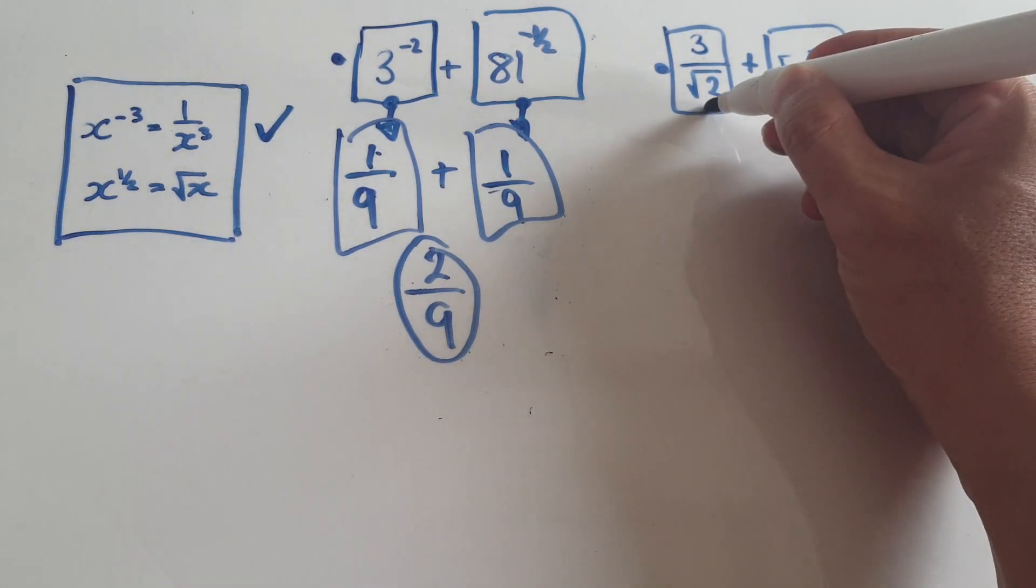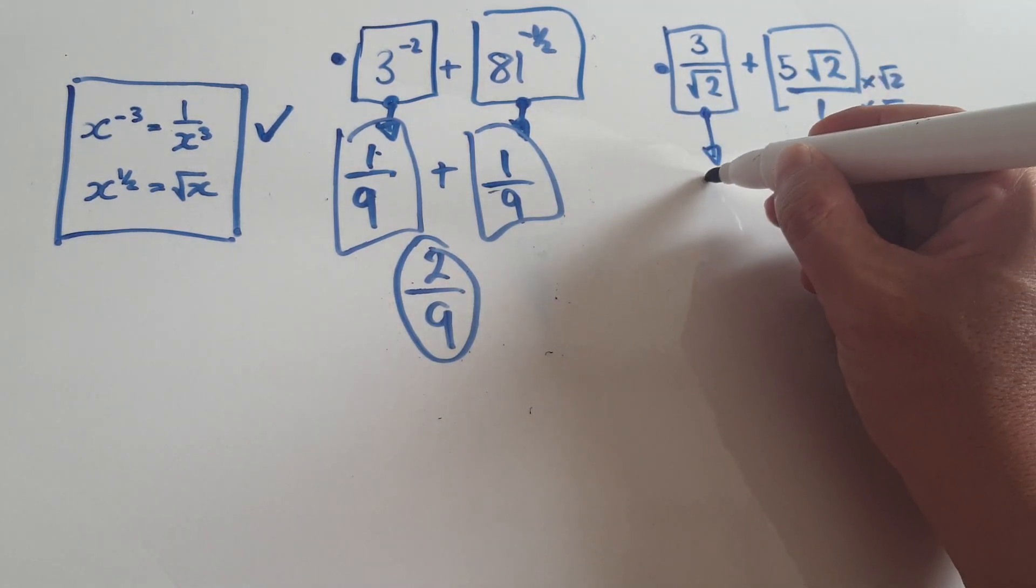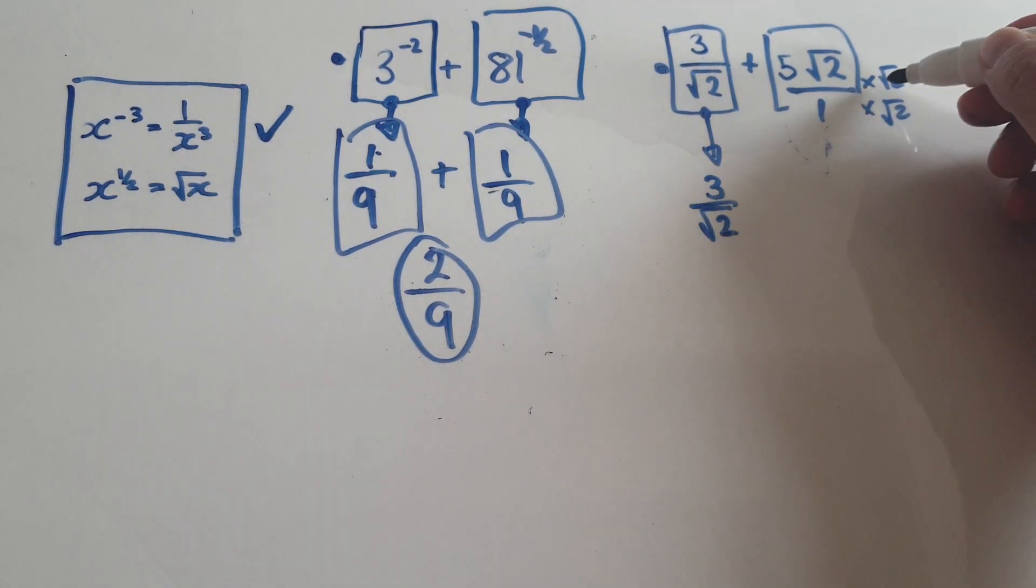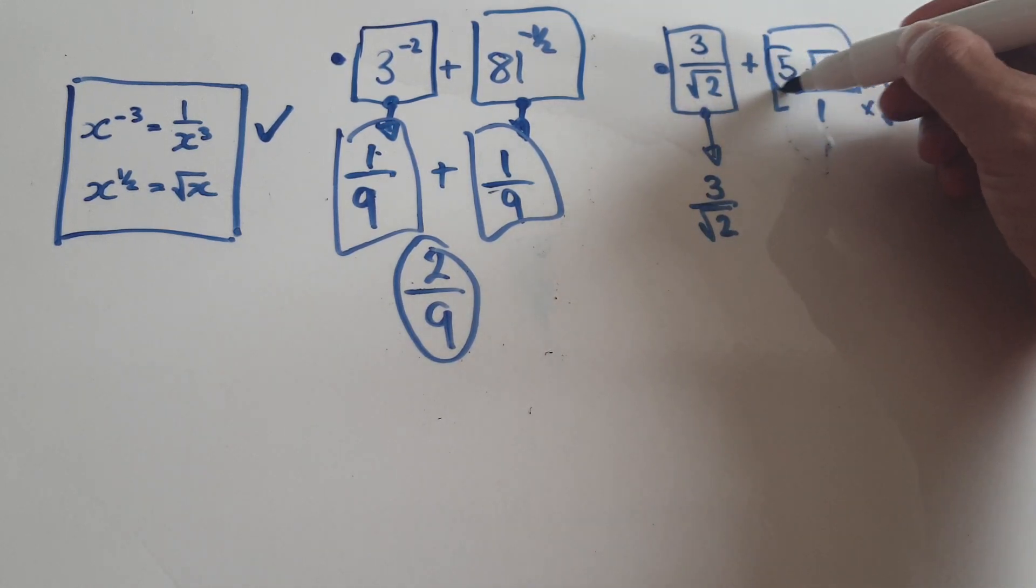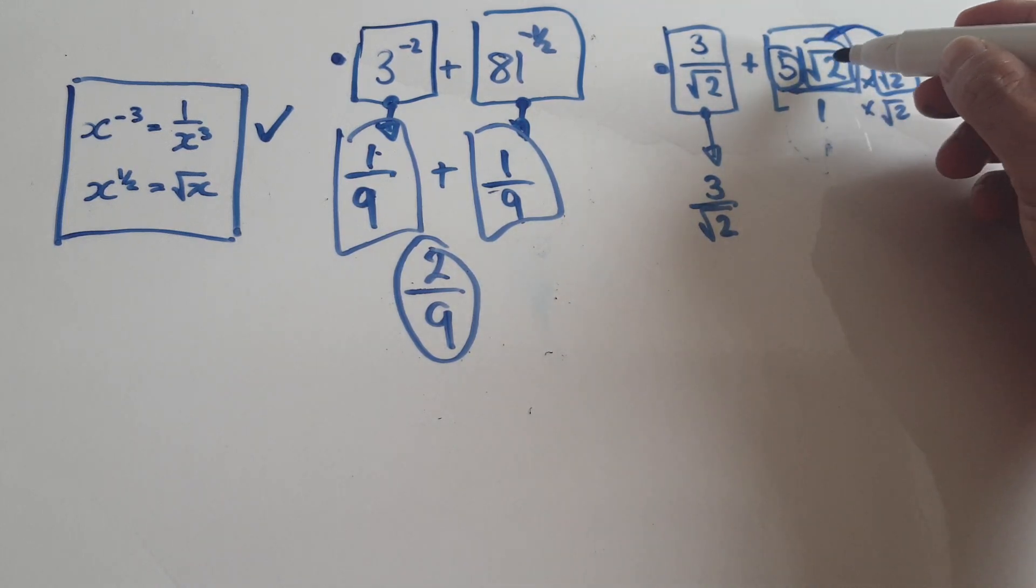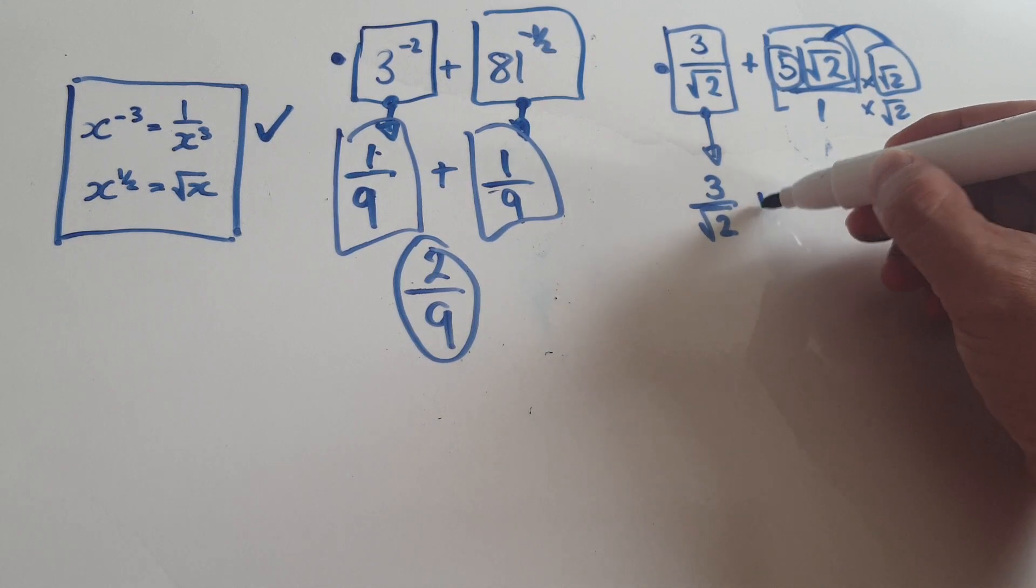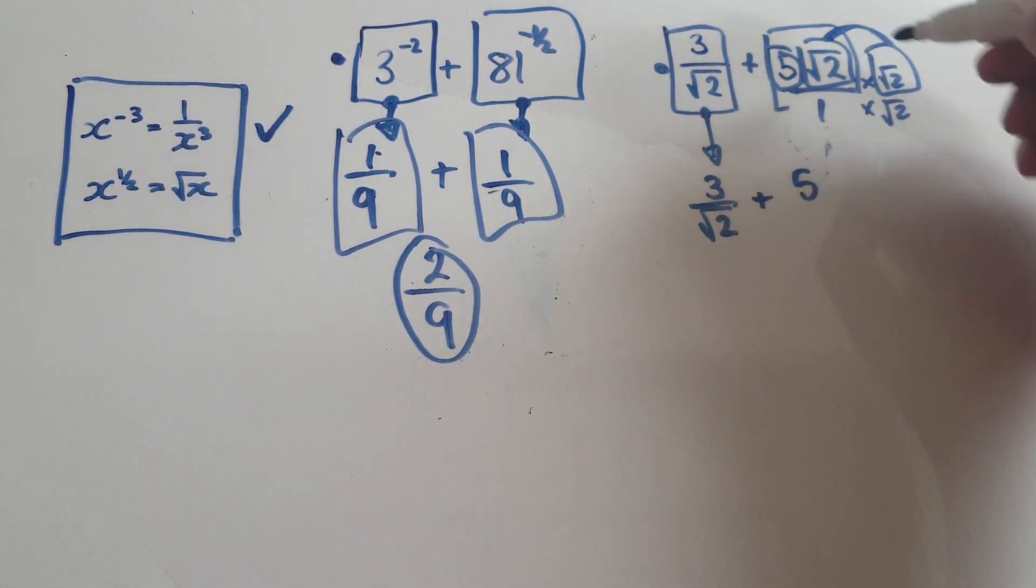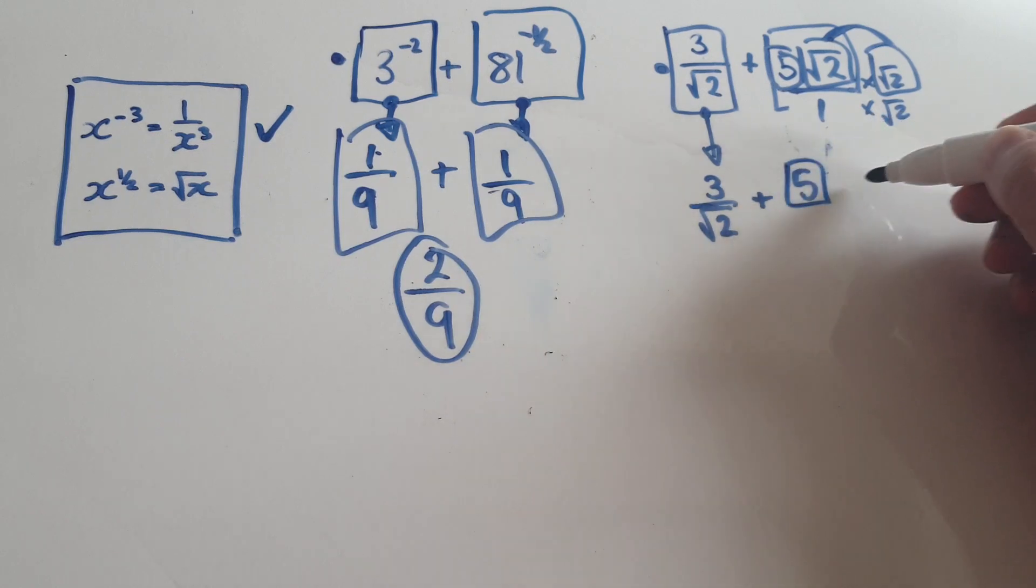Let's just leave this block as it is. So that would be 3 over root 2. This block here, when you times top and bottom by root 2, here you've got one block times another block times another block. These two blocks are the same. Square root of 2 times the square root of 2, that is 2. When you merge these two roots together, that would become a block of 2, because root 2 squared is 2.